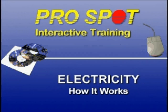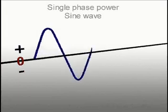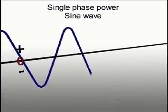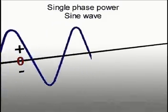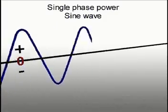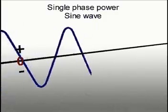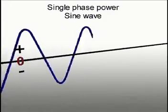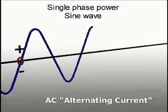Electricity in your shop. How it works and why you need to understand how it affects the performance of your welders and other equipment. Single phase. This is how the electricity is delivered from the electric company. When viewed in an oscilloscope, you can see the current as a sine wave form that alternates between positive and negative polarity across the zero line. This form of electricity is called alternating current or AC.